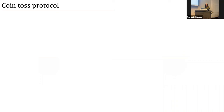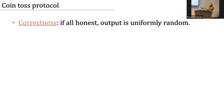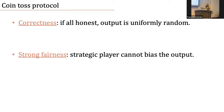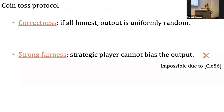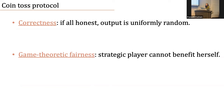So let's turn to the coin toss protocol. In a coin toss protocol, our goal is to toss a uniformly random coin. For correctness, if everyone behaves honestly, we want a uniformly random coin. We also want to guarantee fairness. The traditional fairness notion considered in the crypto literature is called strong fairness, and it requires that a strategic player cannot bias the output towards either direction. Unfortunately, Cleve showed in 1986 that it is impossible to achieve strong fairness in the two-party case. In Blum's coin toss protocol, I can always bias the output towards one by losing the game intentionally, but I cannot bias it towards my preference.